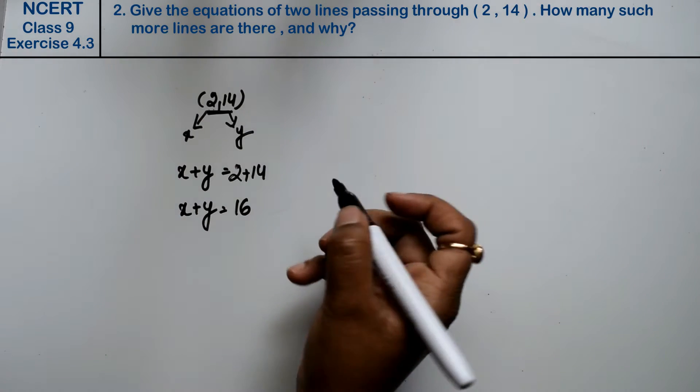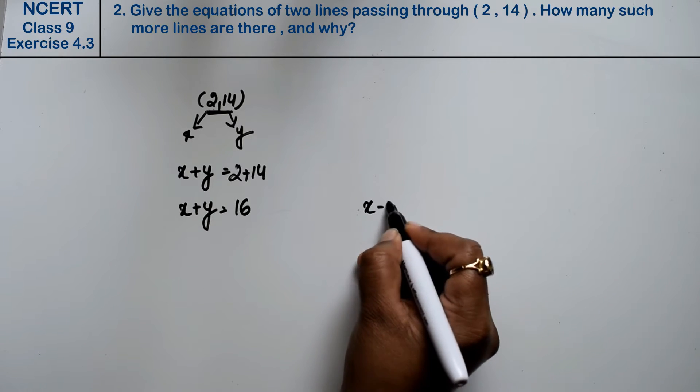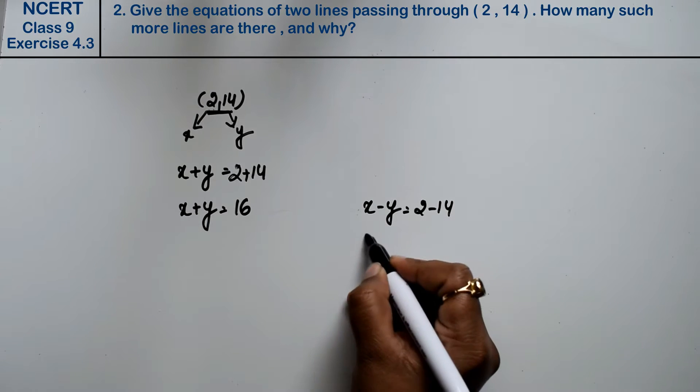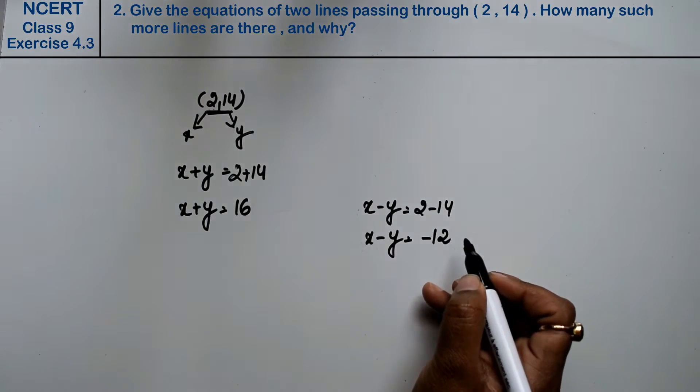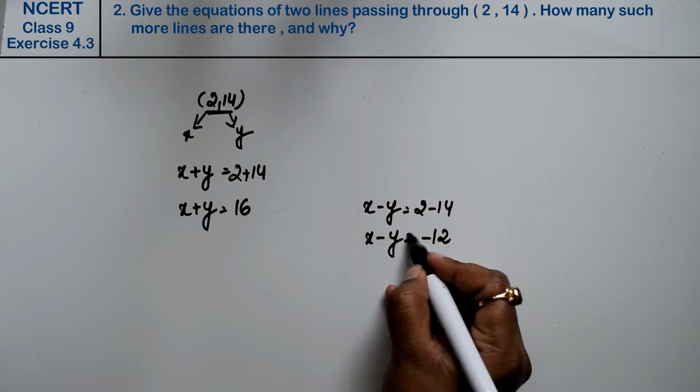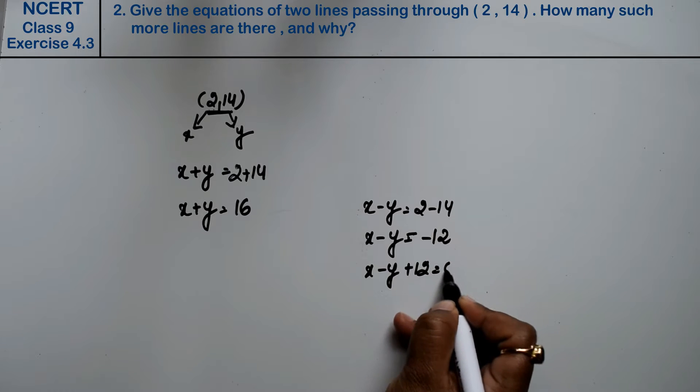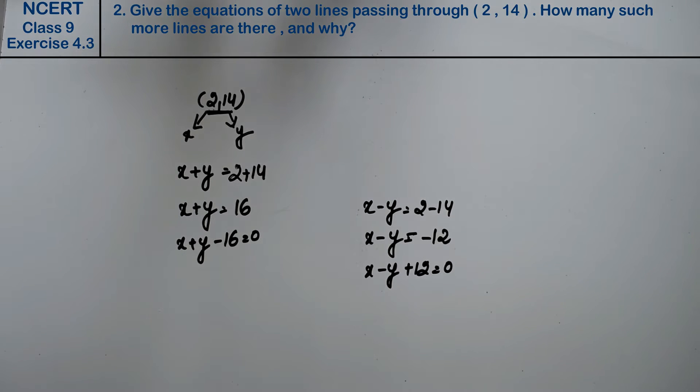And what can be the second one? We need to make 2 equations. I made one with x plus y, now let me try x minus y. That will be 2 minus 14, that is x minus y equals minus 12. So I can write this as x minus y plus 12 equals 0, and the other as x plus y minus 16 equals 0.